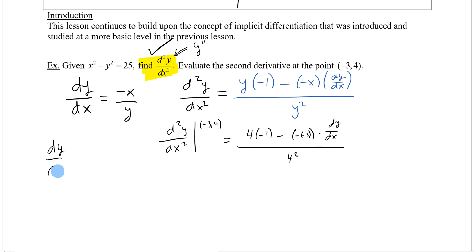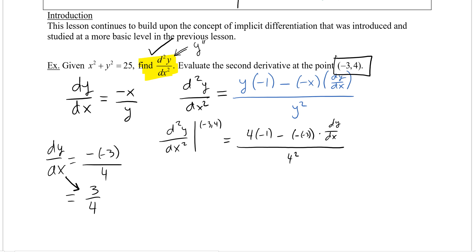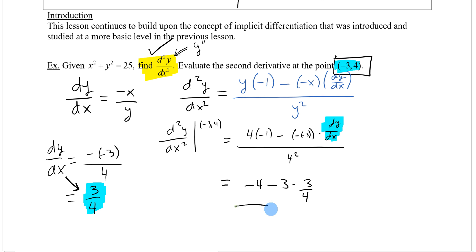Plugging negative three comma four into the first derivative: dy/dx equals negative of negative three over four, which equals positive three over four. Replacing dy/dx with three over four in the second derivative expression, I get negative four minus negative three times three over four, all over sixteen.